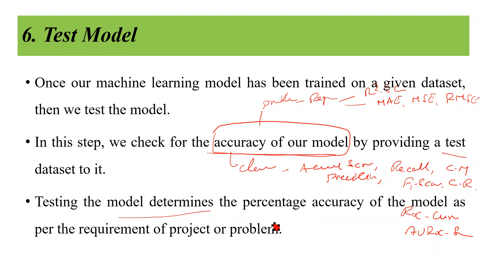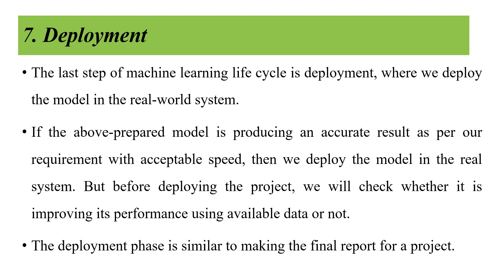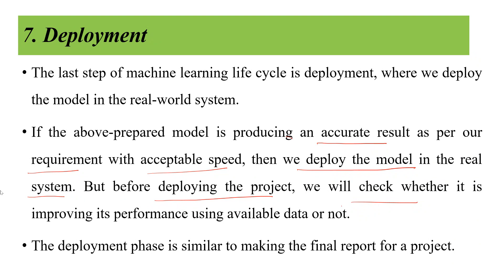Testing the model determines the percentage of accuracy as per the requirements of the project. The final step is deployment — the last step of the machine learning life cycle. In deployment, we deliver our model to third parties. If the model is producing accurate results within acceptable speed, we deploy it in real systems. Before deploying, we check whether the model is improving performance using the available data set. The deployment phase is similar to making the final report of the project. This completes the whole life cycle of the machine learning process.